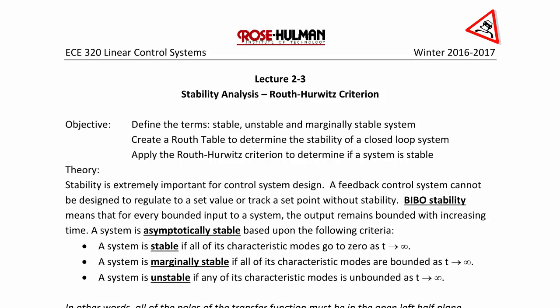Today we will start Lecture 2-3 on Stability Analysis, Routh-Hurwitz Criterion. The objective is to define the terms stable, unstable, and marginally stable given a control system, and to create a Routh table to determine the stability of a closed-loop system. We will also apply the Routh-Hurwitz Criterion to determine if a system is stable.